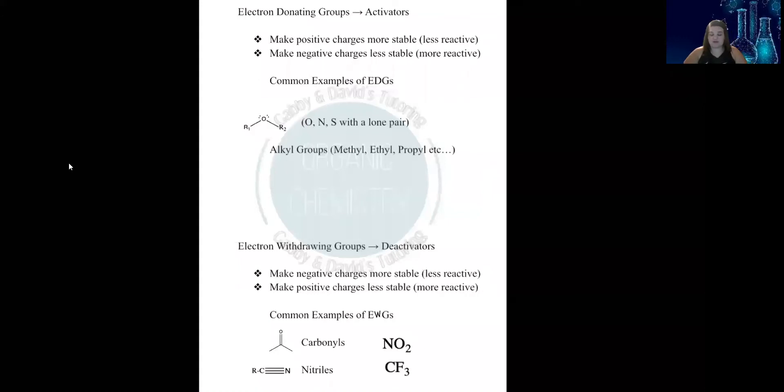When we talk about donating groups, another term we use is activators. What donating groups do is they make positive charges more stable. A lot of the time you're going to see these groups represented as atoms with lone pairs. Oxygen with lone pairs, nitrogen, sulfur—those are common examples of electron donating groups. Other examples are methyls, ethyls, propyls, and similar alkyl groups.